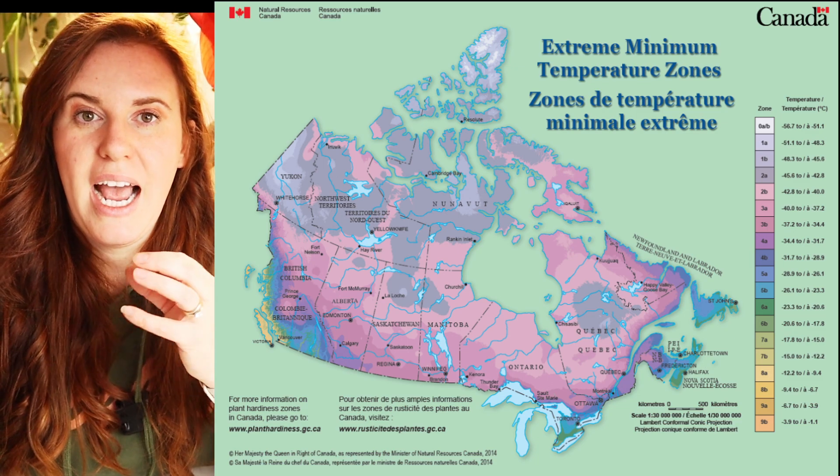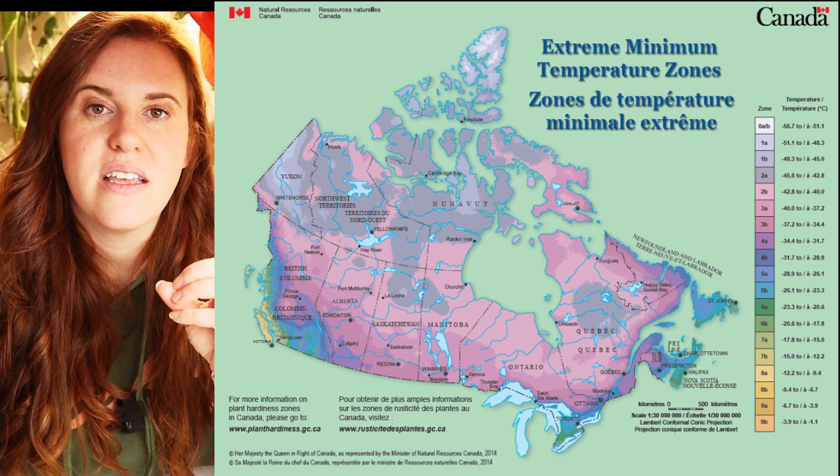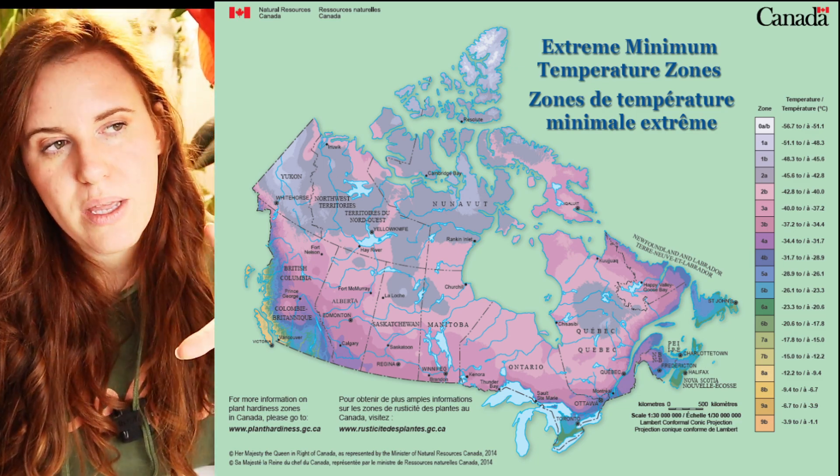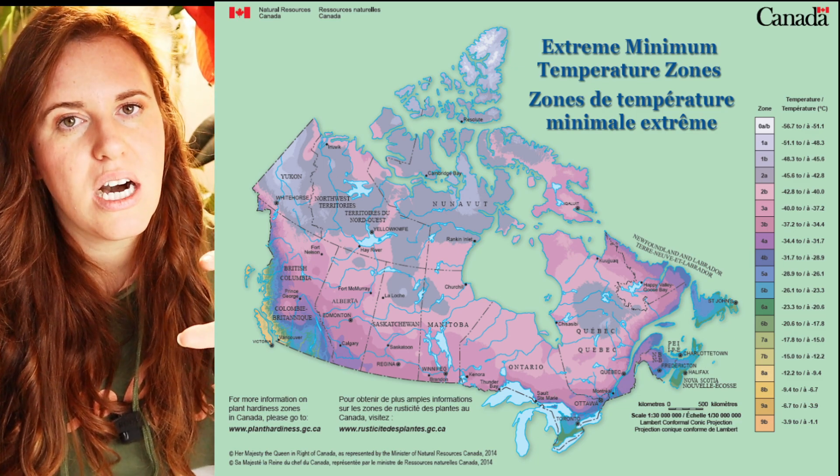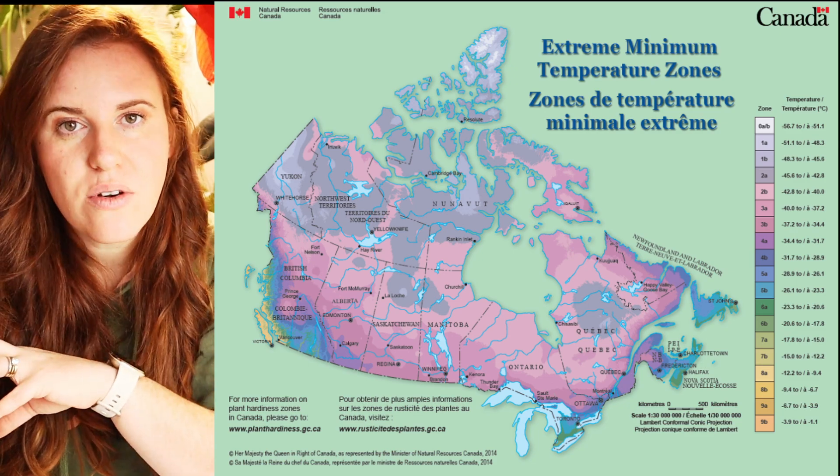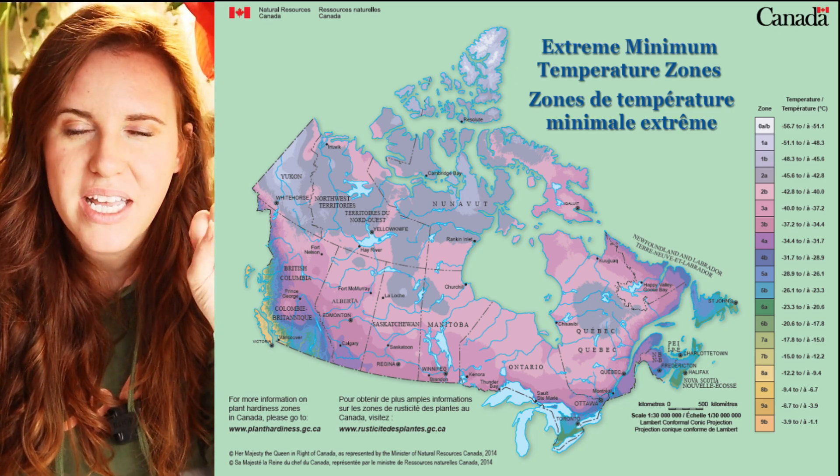The Canadian government has put together a single-variable map that mirrors the American one, which you can use to determine what American zone you are in. Because the Canadian map factors in seven different things, we actually tend to see that the changes are minute or lower in nature. The USDA map revision actually shows many zones going up by one to half a zone.